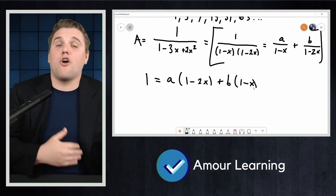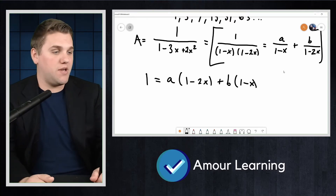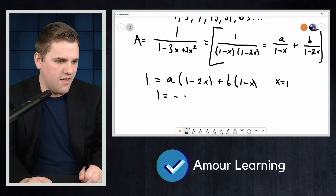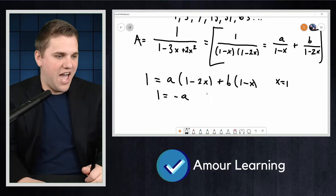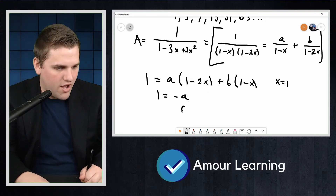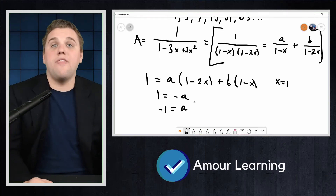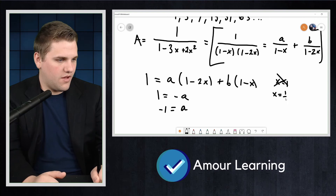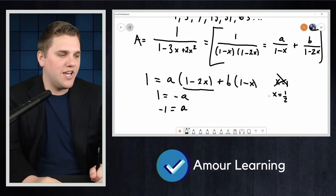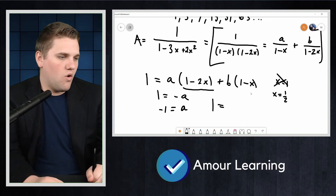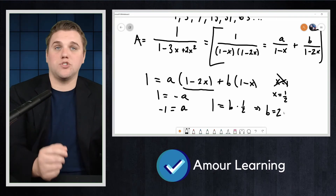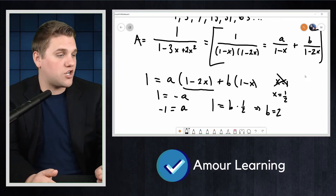This must be true for all values of x. If x = 1, the equation becomes 1 = −A, so A = −1. When x = 1/2, the first term is zero, and we get 1 = B·(1/2), which means B = 2. So A = −1 and B = 2.